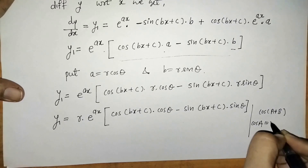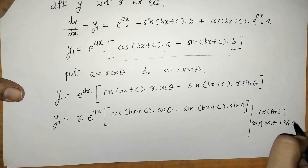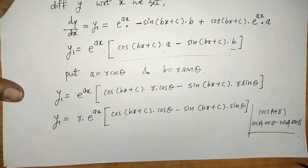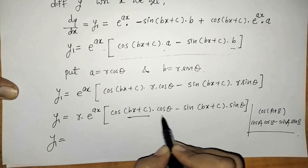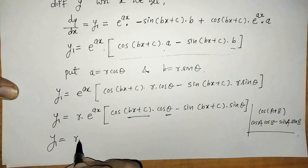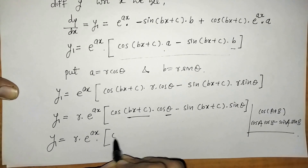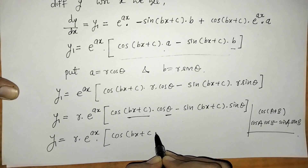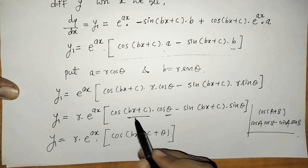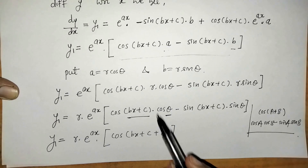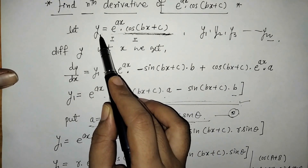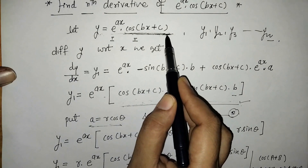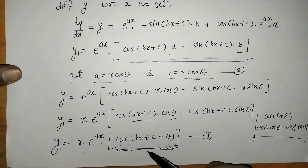We have cos of A into cos of B minus sin of A into sin of B, which is the expansion of cos(A+B). This expression matches our bracket where A is bx plus c and B is theta. So we convert the bigger expression into cos of bx plus c plus theta. In d1y we have a cos function, which makes finding further derivatives easier.